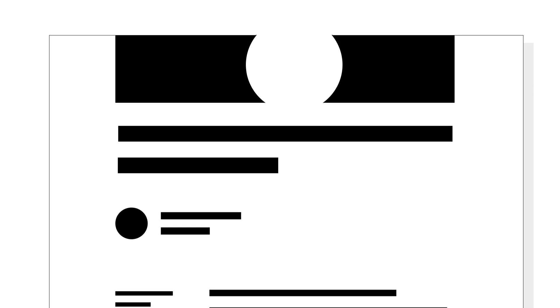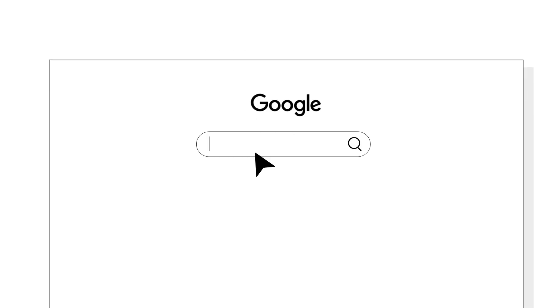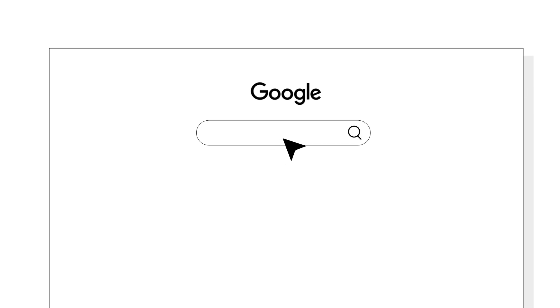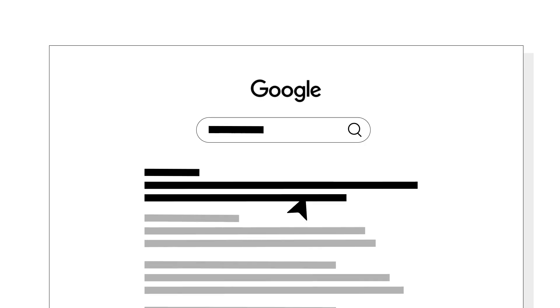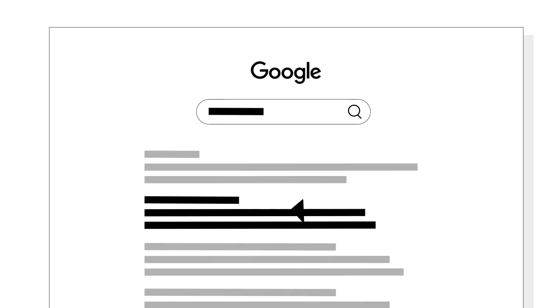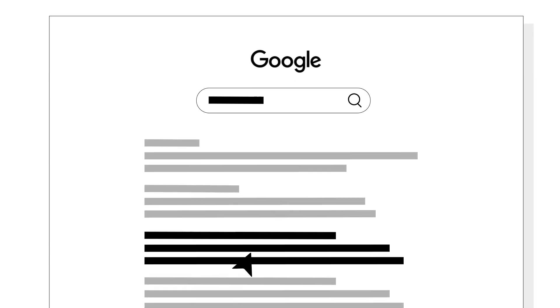Posts are particularly helpful because you can use them to increase engagement by allowing visitors to comment on them, an option that is not available on regular pages. Many visitors will find and enter your website by clicking a post link via search engines and social media, rather than through the homepage.